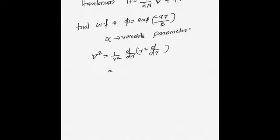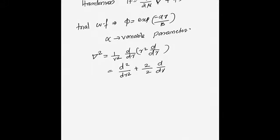We can simplify the radial Laplacian operator step by step using the product rule. Differentiating r² and then simplifying, the operator becomes d²/dr² + (2/r) d/dr. Both forms are equivalent, so we can use this simpler form going forward.